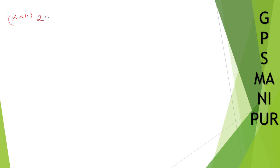That's all. Now the next question is Roman number 22: 27x cube plus 9x square plus x plus 1 by 27.